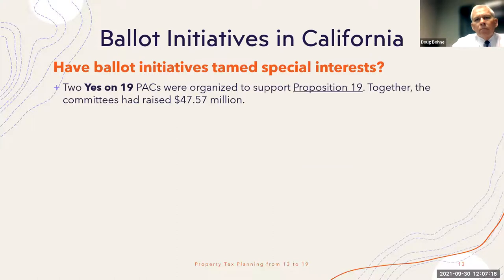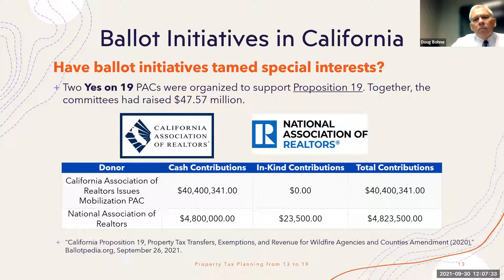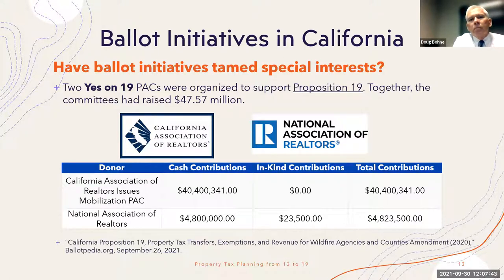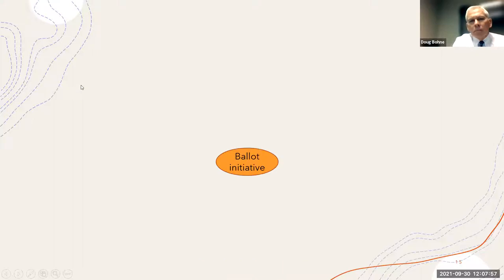More relevant to the property tax area is Prop 19. The biggest contributors to that initiative campaign were the California Association of Realtors and the National Association of Realtors — around 45 million dollars. Less than the 200 million on Prop 22, but still a significant amount. On the No on Prop 19 side, contributions totaled about fifty thousand dollars from Howard Jarvis.